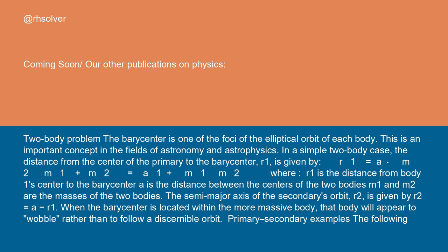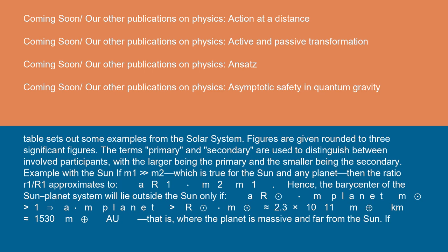The following table sets out some examples from the solar system. Figures are given rounded to three significant figures. The terms primary and secondary are used to distinguish between involved participants, with the larger being the primary and the smaller being the secondary.